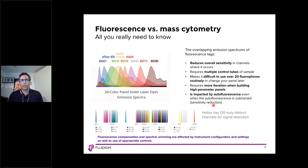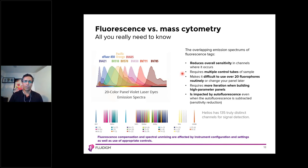If you quickly compare fluorescence and mass cytometry, you can see an example of the emission spectra for a violet laser excited dye in a 20-color flow cytometry panel. There is significant overlap between emission spectra of fluorescent tags. This overlap reduces overall sensitivity in the channels it occurs, requires multiple control tubes, makes it difficult to use over 20 fluorochromes routinely or to change your panel later, and requires more interaction when building high-parameter panels than mass cytometry. Fluorescent cytometry signals are also impacted by autofluorescence.